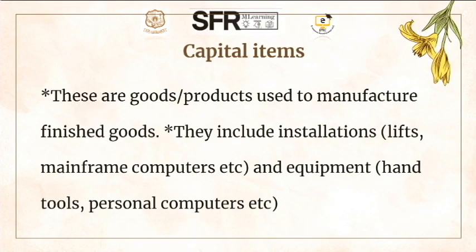Capital items: these are goods or products used to manufacture finished goods. They include installations like lifts, mainframe computers, etc., and also equipment such as hand tools and personal computers.